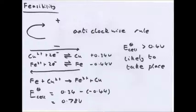Now if a reaction is feasible, the standard cell potential will be bigger than 0.4 volts. If it is less than 0.4 volts, it is unlikely it will take place. It could, but it's unlikely. So for this reaction, we've got 0.34 minus -0.44 equals 0.78 volts. So it is likely to happen.